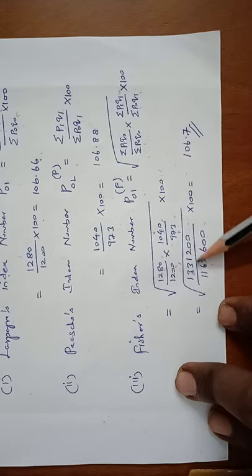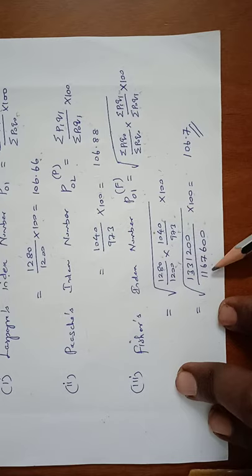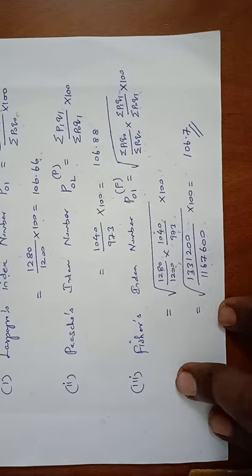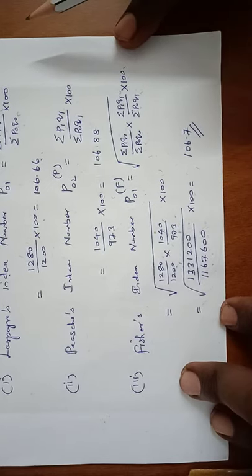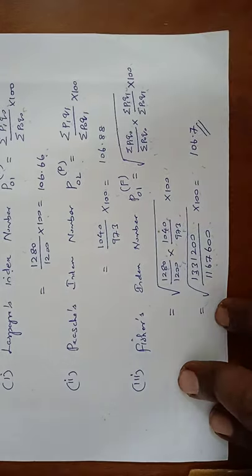Multiply the numerator: 1331200. Multiply the denominator: 1167600. Taking the square root of these two results into 100, final answer is 106.7. Hence the problem.